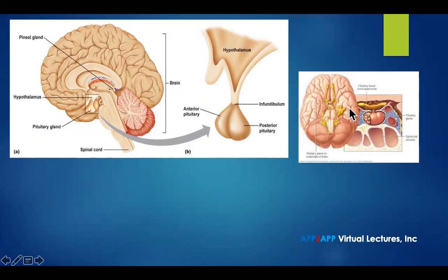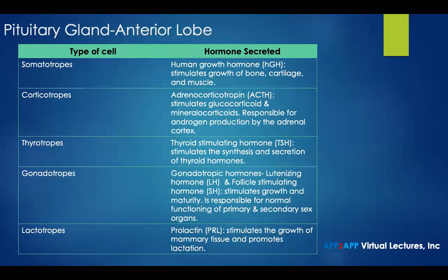On this side, we have the pituitary gland sitting in the sella turcica, and as you can observe, there is a pituitary mass impinging on the lobe. In reviewing the anterior lobe briefly, we have somatotropes, corticotropes, thyrotropes, gonadotropes, and lactotropes.